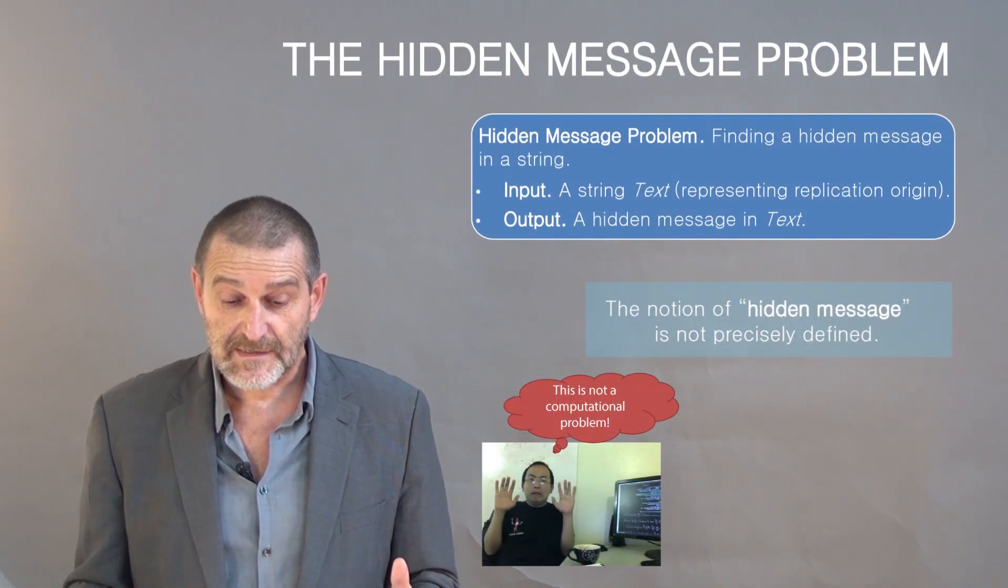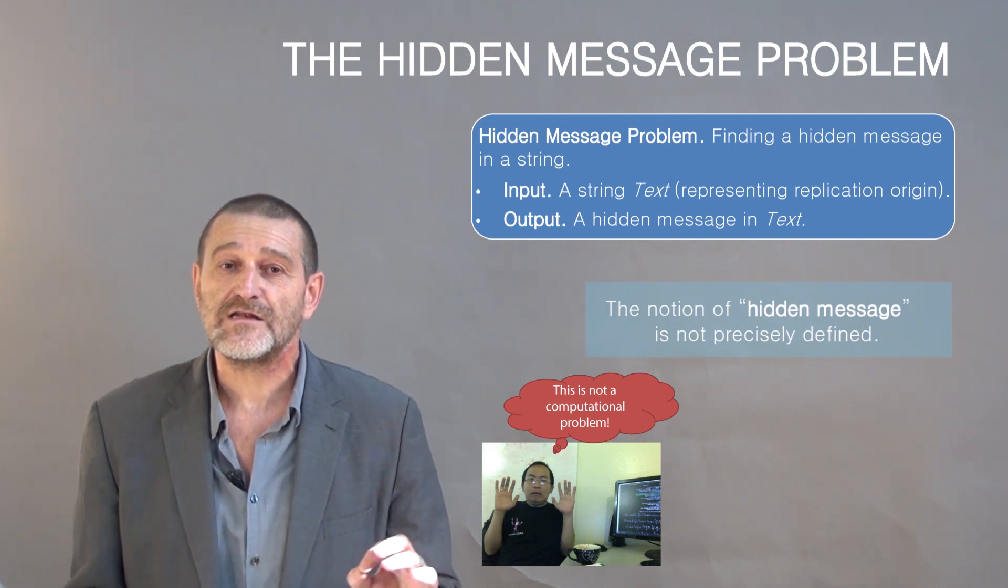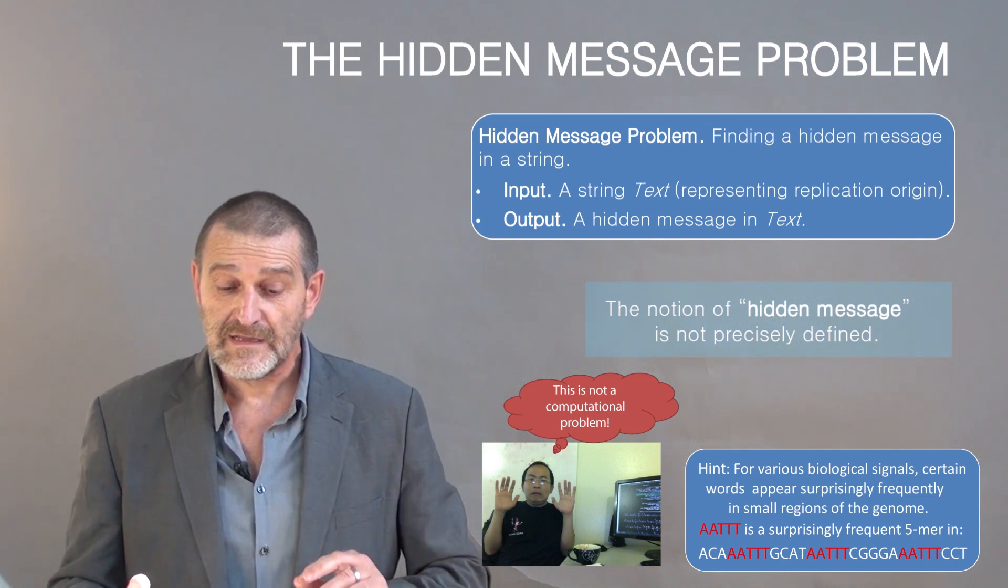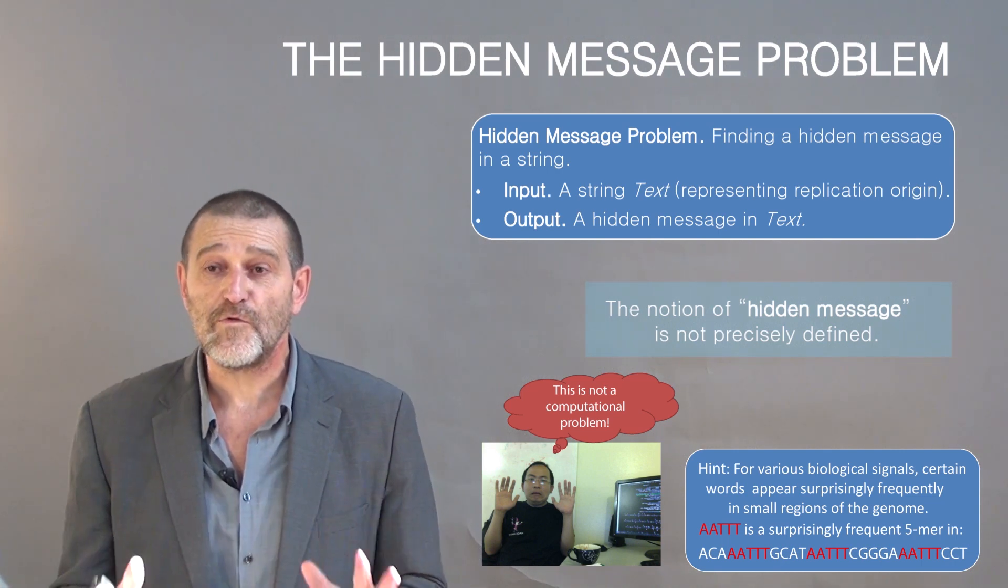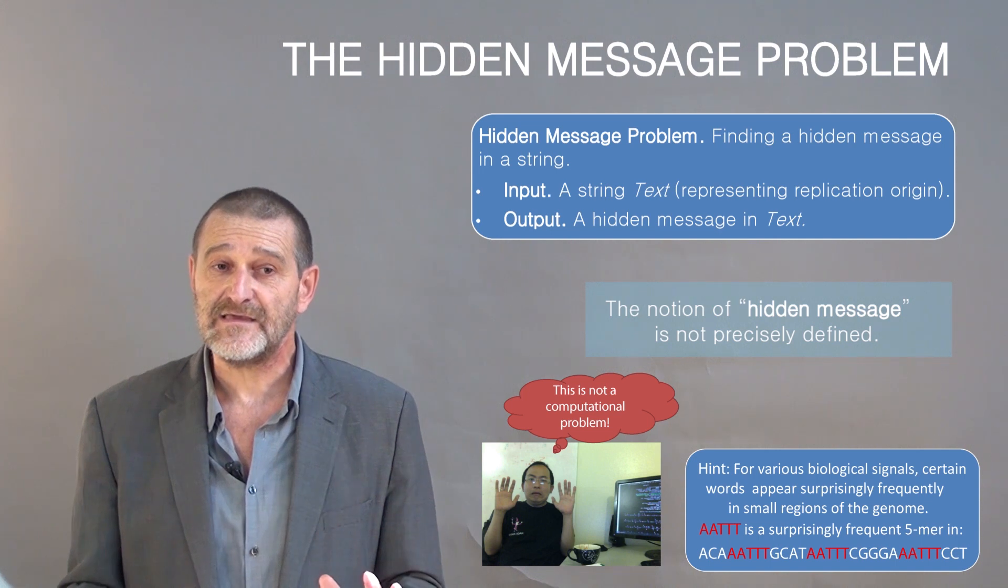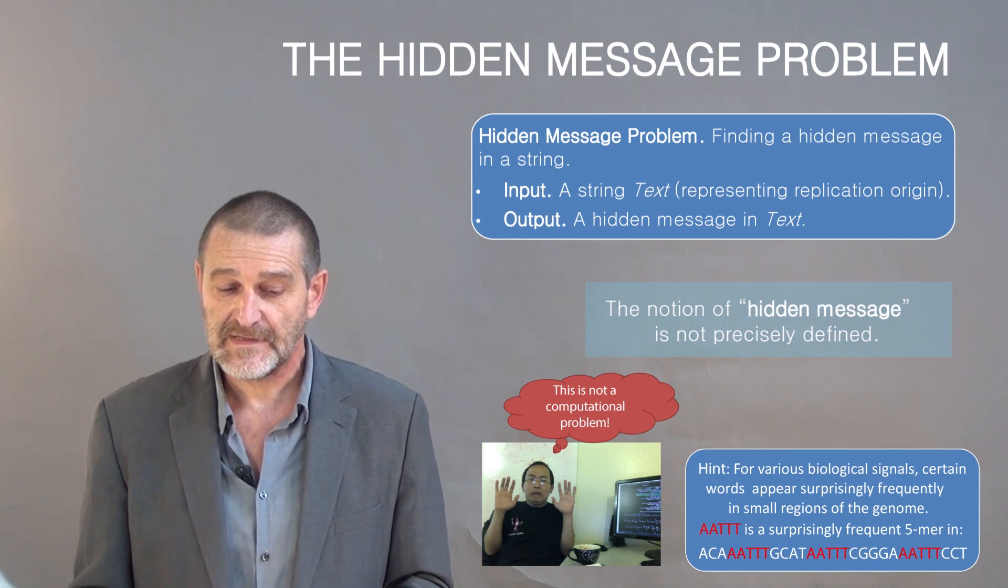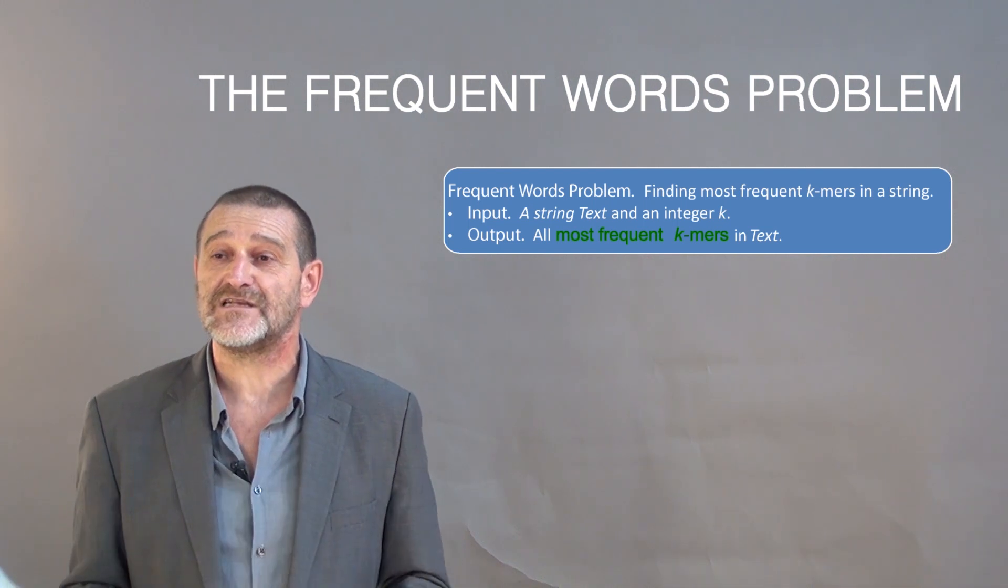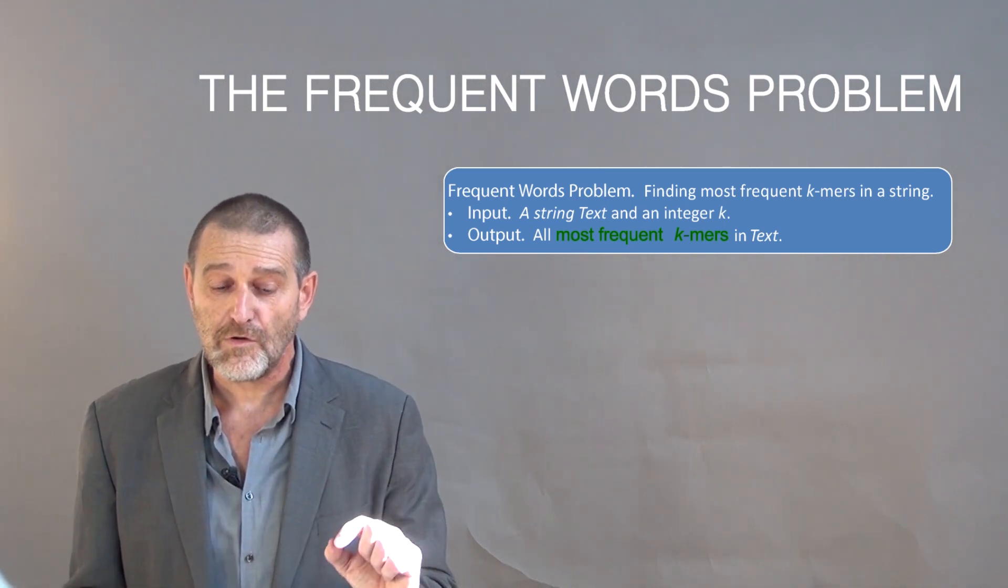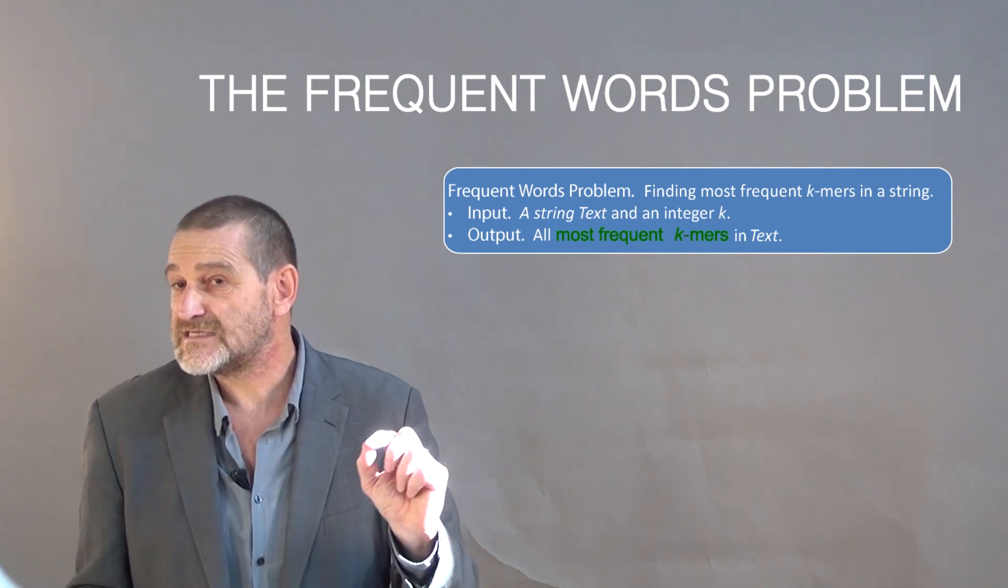Now, if our original hidden message problem was clearly ill-defined, let's now try to redefine it so it would make sense even for computer scientists. How would we redefine it? Well, for various biological signals, certain words appear surprisingly frequently in the text. For example, at this slide, AATT appears surprisingly frequently in a short text. It's unlikely that it would happen by chance. And then we formulate our first real Rosalind problem. Frequent words problem is I give you a string and an integer k. And you need to find all most frequent k-mers in text, which means all most frequent strings of length k in the text. Does the problem clear now?